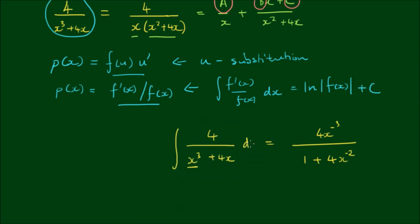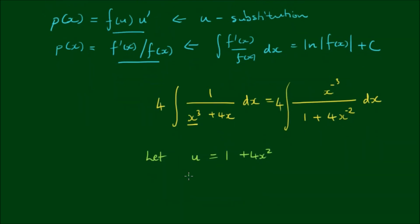Integrating both sides, the 4 can come out the front. Now if we let u equal 1 plus 4x to the negative 2, then we can make this substitution. The derivative of u with respect to x is equal to negative 8 times x to the negative 3. Separating the differentials gives us dx on the left-hand side, and we can substitute u and du into the above integral.